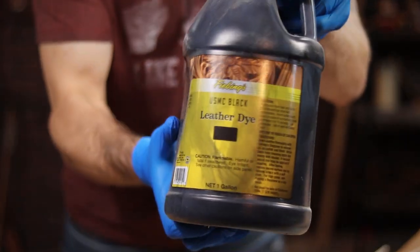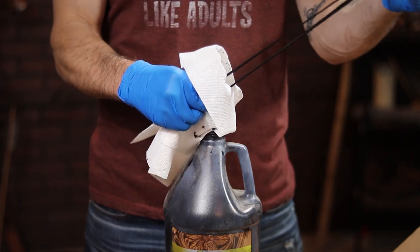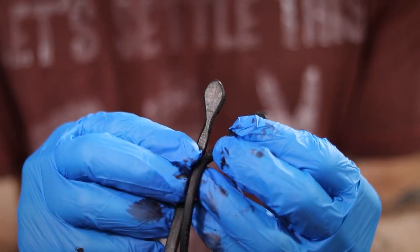For color, I'm using this jug of USMC Black. With such a big bottle, I'm easily able to dip dye these strips into a beautiful uniform black.